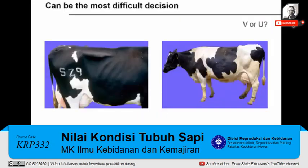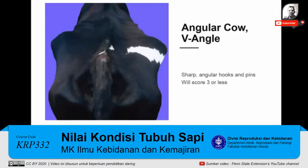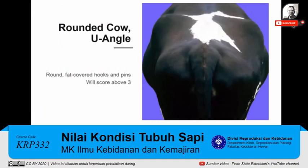This decision may be the most difficult one in the body condition scoring process, especially if the cow is near a score of 3.0 or 3.25. If the difference between a U and a V is not clear, move to the rear of the cow and observe the same angle between the hooks and pins. It may also help to evaluate the angularity of the hooks and pins. A cow with a V angle will have clearly sharp and angular bones, scoring 3 or less, while a cow with a U angle will have smooth, round bones clearly covered in fat and will score above 3.